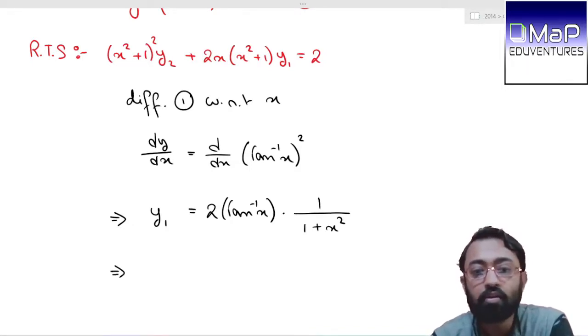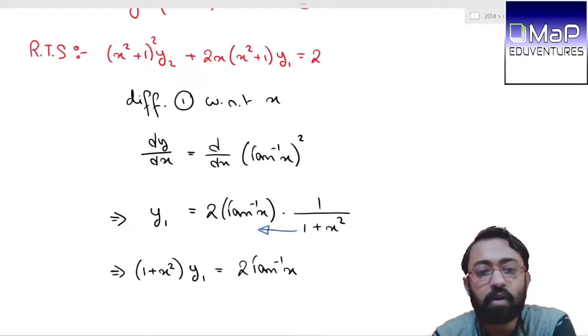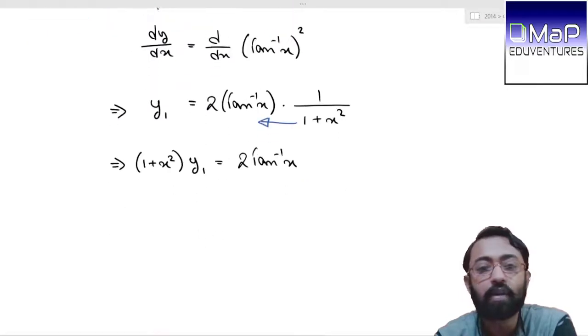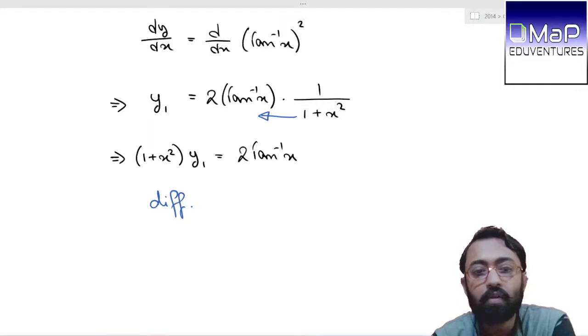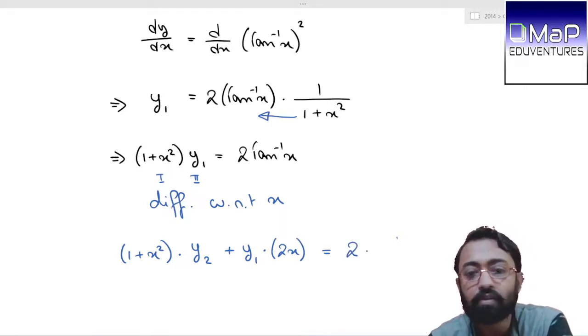Now we'll differentiate a second time to get the second order derivative. But before that, cross multiply 1 plus x square from the right hand side. So 1 plus x square into y1 equals 2 times tan inverse x. Now differentiate this with respect to x. Differentiating with respect to x, the left hand side has two terms in product form, so use the product formula: 1 plus x square into d/dx of y1, which is y2, plus y1 into d/dx of 1 plus x square, which is 2x. The right hand side gives d/dx of tan inverse x equals 1 over 1 plus x square.